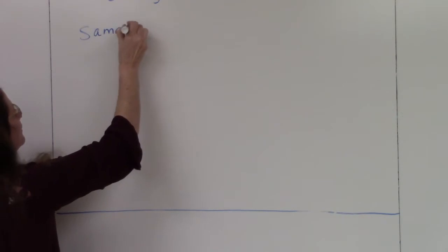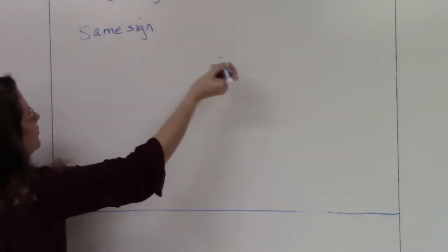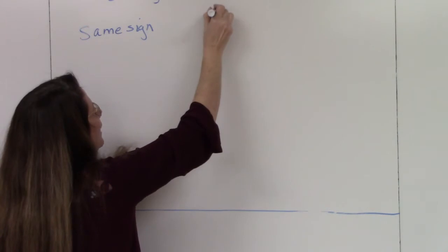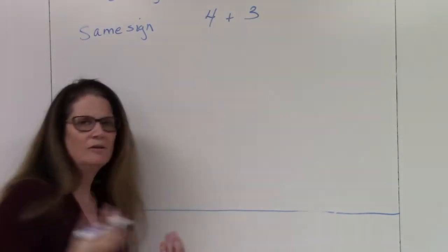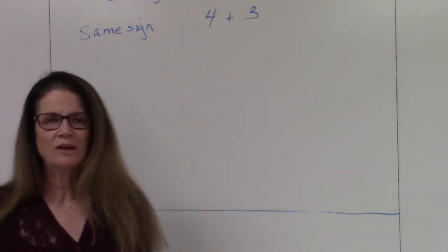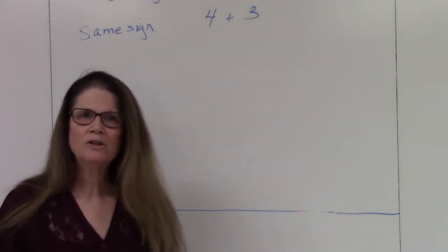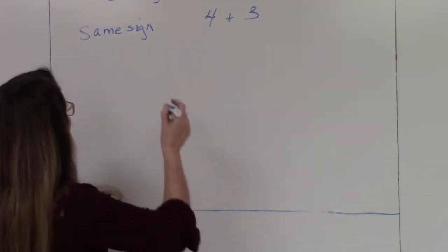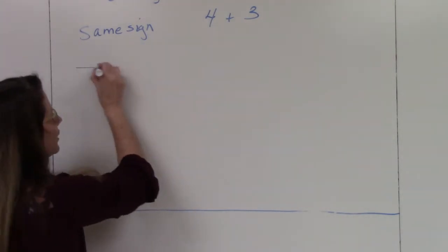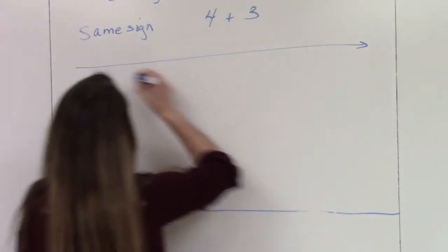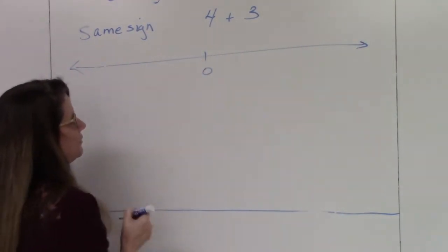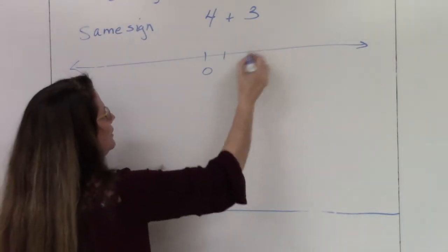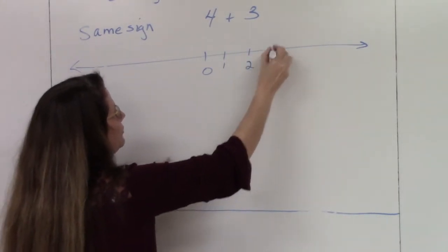When we have the same sign, that means we have two numbers that are both positive — this is what you've been doing since kindergarten. On a number line, zero is in the middle. To the right are all of our positive numbers.